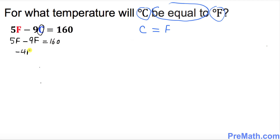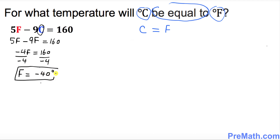Simplifying: negative 4F equals 160. Dividing by negative 4, F turns out to be negative 40 degrees. Since C equals F, C is also negative 40 degrees. Thus, at negative 40 degrees, degrees Celsius equals degrees Fahrenheit.